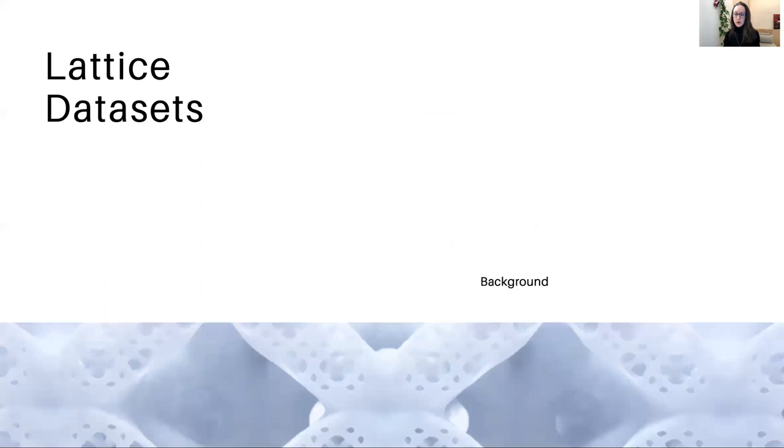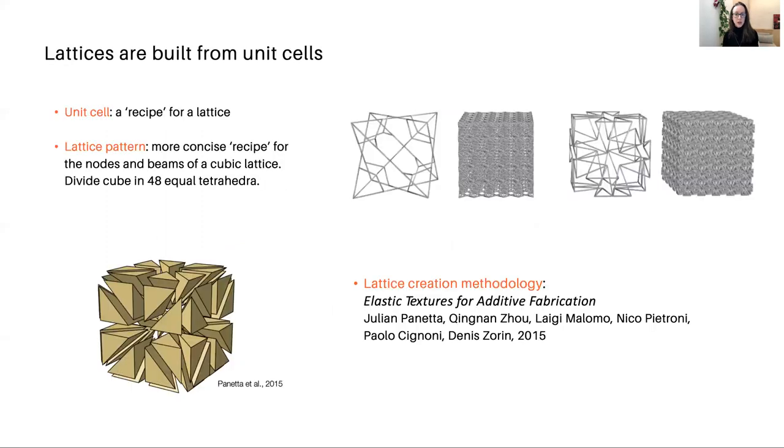Let me say a few things about our lattice data sets. First of all, lattices are built from unit cells. So what is a lattice? Let's think of it as a repetitive structure in three dimensions. It's invariant under the three translational symmetries of R3. And if we take the quotient by those translational symmetries, we end up with a unit cell, which is a kind of a recipe for the lattice. So here you have a unit cell, and then you pack it together to fill space to form your lattice.